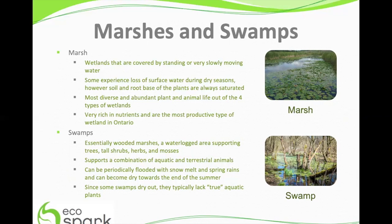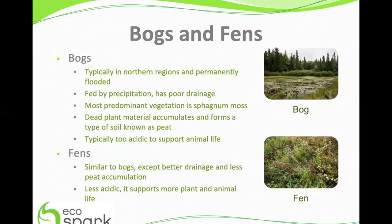Swamps, essentially wooded marshes, are waterlogged areas supporting trees, tall shrubs, herbs, and mosses. They support a combination of aquatic and terrestrial animals and can periodically flood with snowmelt and spring rain, and may also become dry towards the end of summer. Since some swamps do dry out, they typically lack true aquatic plants. Bogs are typically found in northern regions and are permanently flooded, fed by precipitation. They have poor drainage and the most predominant vegetation is moss. Bogs accumulate dead plant material which forms a type of soil known as peat, and are typically too acidic to support animal life. Fens are similar to bogs except they have better drainage and accumulate less peat, and are less acidic, therefore can support more plant and animal life.